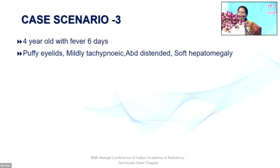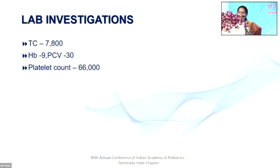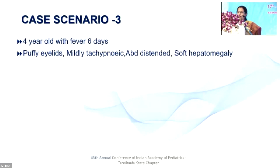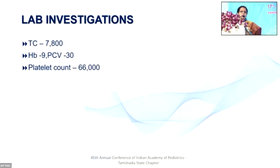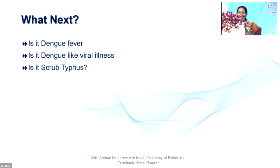Moving on to the next case: a four-year-old with fever of six days, puffy eyelids, mildly tachypneic, abdomen distended, soft hepatomegaly. Total count is 7,800, hemoglobin is 9, PCV is 30, platelet count is 66,000. This looks like dengue with third spacing — but what is against dengue? PCV should be high when there is third spacing. Active third spacing cannot occur with a low PCV. And once PCV improves, the platelet count should parallelly improve.